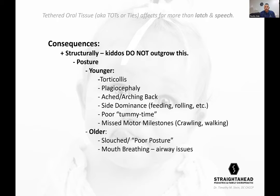Older kids develop slouched poor posture. Some of it is being on their phone, but if the fascia is pulling them forward and they're also on technology, everything gets more and more tight. Mouth breathing results from that tightness, which leads to a whole slew of airway issues. Mouth breathing means you're bypassing the nasal passage — your first defense against infection. The nasal passage filters out pathogens before they reach your tonsils or adenoids. Mouth breathing leads to chronic infection.